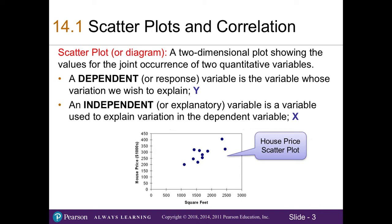For example, on the X-axis we have square feet of a house, which is the variable that might explain the price of a house. On the Y-axis is the price of a house. If we were to plot our data, we can see where our dots will fall, and looking at the scatter plot, we might see a relationship between square feet and house pricing. This is a visual representation of a potential correlation or relationship between two variables.